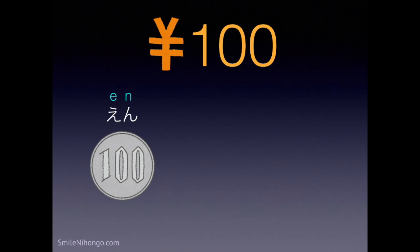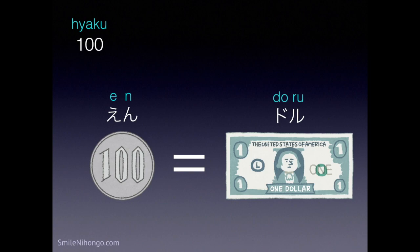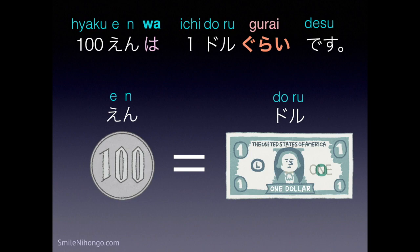Let's learn dollars in Japanese too. Dollars in Japanese is doru. So 1 dollar is ichi-doru. 100 yen is approximately 1 dollar — hyaku en wa ichi-doru gurai desu.